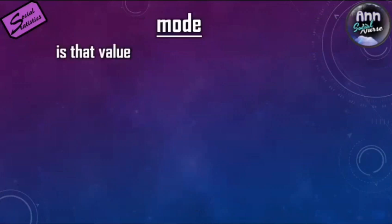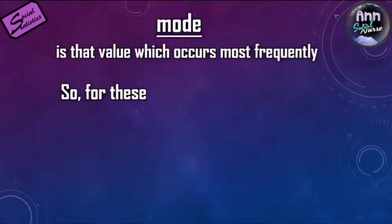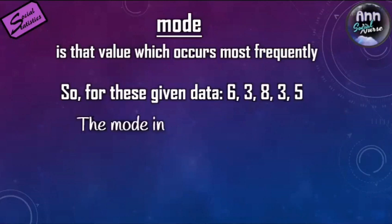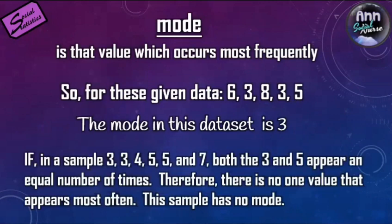The mode is the value which occurs most frequently. For the given data 6, 3, 8, 3, 5, the mode is 3. Now if there is no repeated number, there is no mode. If in a sample — 3, 3, 4, 5, 5, and 7 — both 3 and 5 appear an equal number of times, therefore there is no one value that appears most often. This sample has no mode as well.